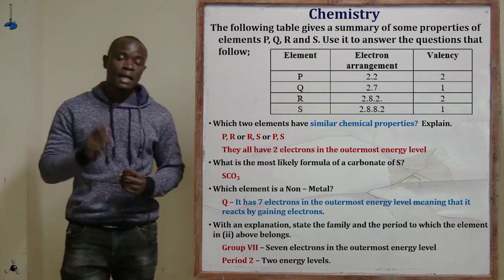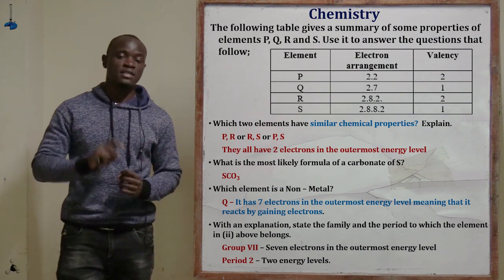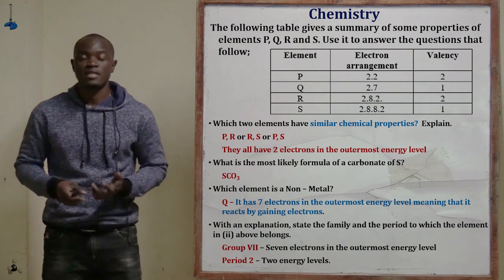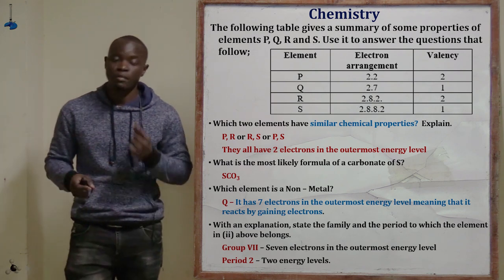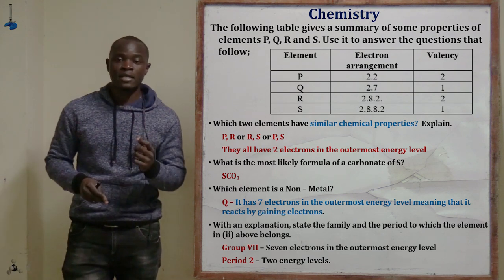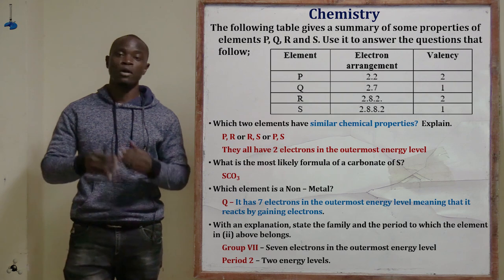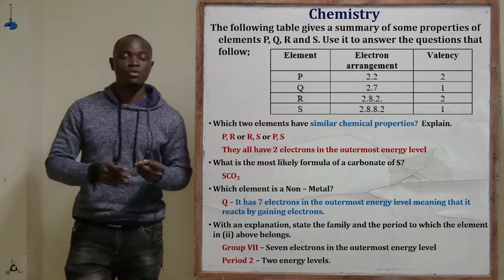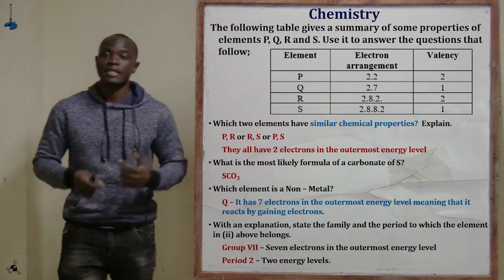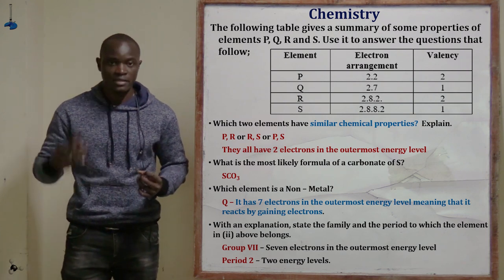Element Q has a last value of 7, meaning it belongs to group number 7. The other elements — P, R, and S — all have two electrons in the outermost energy level, placing them in group 2. Element Q has 7 electrons in the outermost energy level, placing it in group number 7.